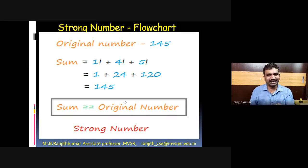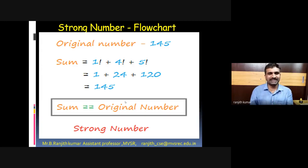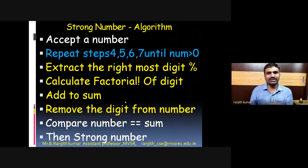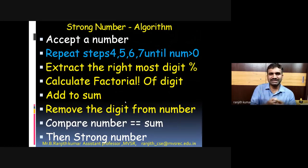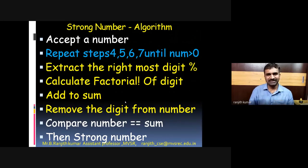So this is the process: we take a digit, we factorial it, and the factorial answers are summed up and compared — then we decide whether it is a strong number or not. Here is a simple algorithm using which we'll write a program. The logic is similar to reverse of a number and sum of digits — only one step is different where we do the factorial of each individual digit.